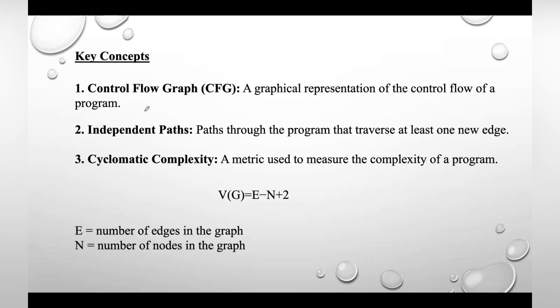The first one is a Control Flow Graph (CFG), which is a graphical representation of a program's control flow. The nodes represent statements or blocks of code, and edges represent the flow control between these nodes. Creating this control flow graph is considered the first step in basis path testing.